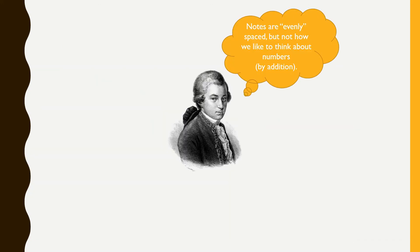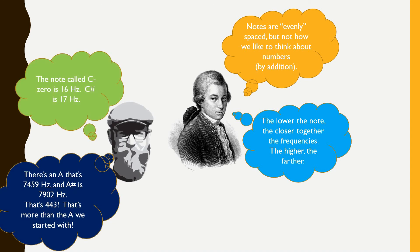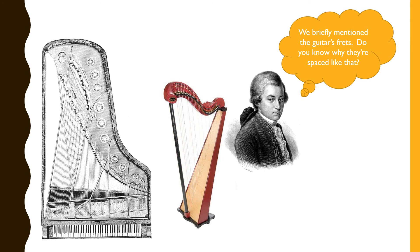Notes aren't evenly spaced the way we might think naturally — but they're proportional. The lower the note, the closer they are together. There's a note called C0 at 16 hertz, meaning it repeats only 16 times a second, and the next note C0 sharp is only 17 hertz. But there's an A at 7459 hertz, and the next note A sharp is 7902 — a difference of 443, which is more than the A that started this whole exploration. This maintains the relationship between one note and the next. The math formalizes the music so that it can be picked up by anybody and played with the same feel.